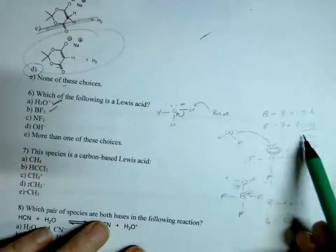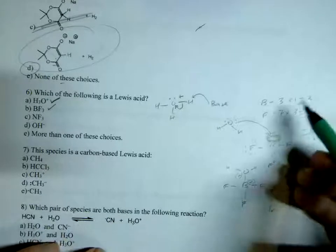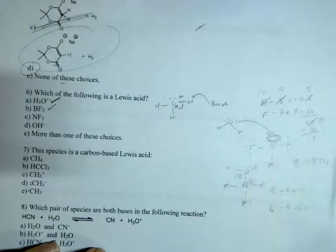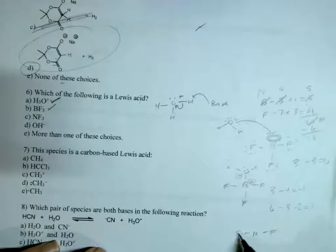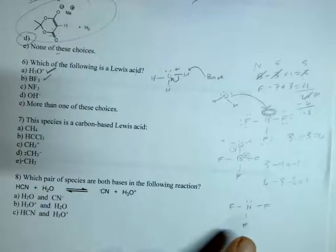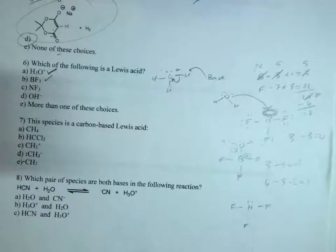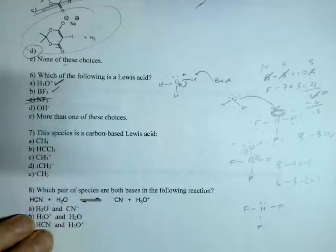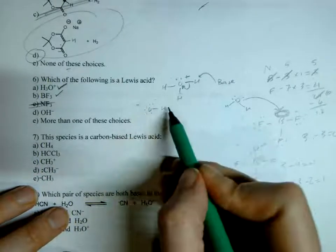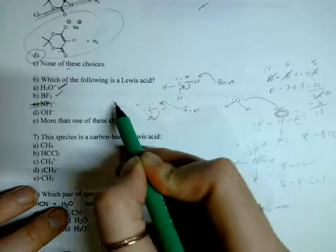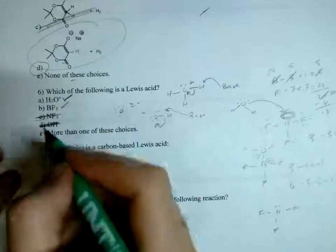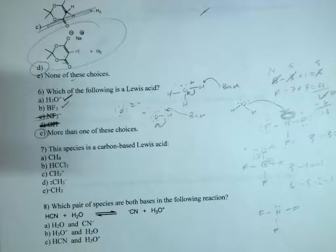NF₃ is different from BF₃: nitrogen has five valence electrons instead of three, giving 26 total electrons. That means there are two electrons left over to fill nitrogen's octet, so NF₃ has no space to accept electrons — NF₃ is not a Lewis acid. OH⁻ is also fully occupied with a full octet and would never lose electrons that way. So the answer is answer choice E, because both A (the first structure) and B (BF₃) can be Lewis acids.